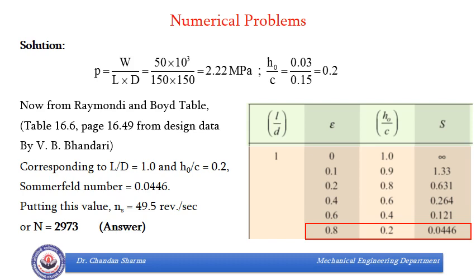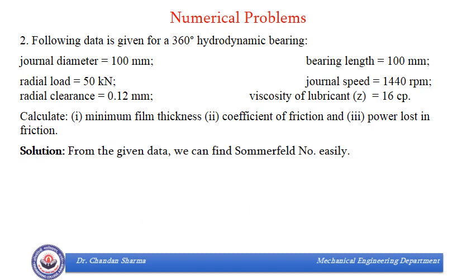Coming to the next question. In this question, we have been given journal diameter, bearing length, radial load, journal speed, radial clearance, and viscosity of lubricant. We need to find what is minimum film thickness, that is H0, what is coefficient of friction, that is F, and what is power loss in friction, that is nothing but heat generated, or F into W, which is radial load, into V, which is speed of journal, velocity of journal.